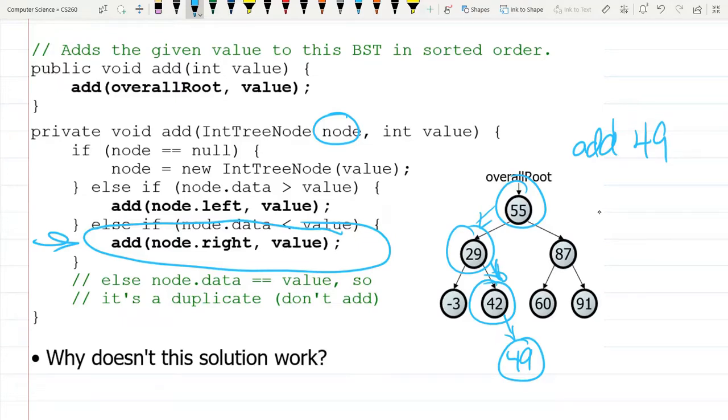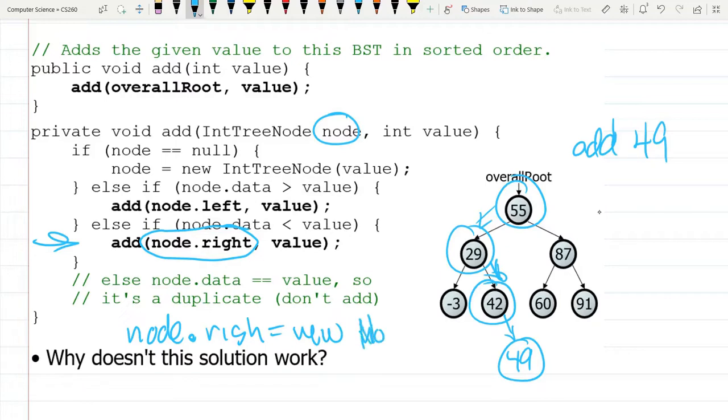And what we need to actually modify is the node.right needs to equal the new value. So it'll look, code will look like node.right equals new node, capital node. I know it's probably int tree node or binary tree node, but you get the point.